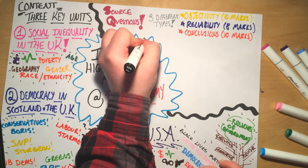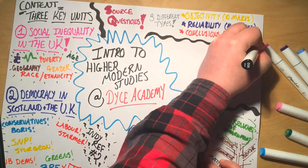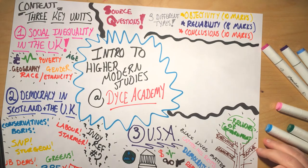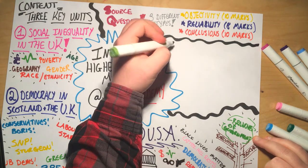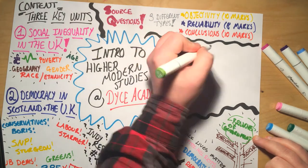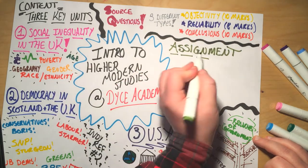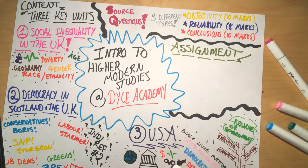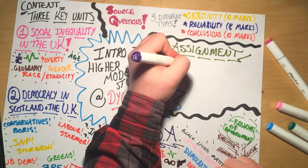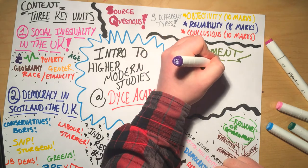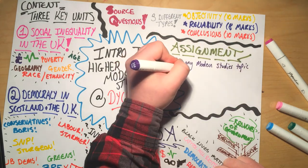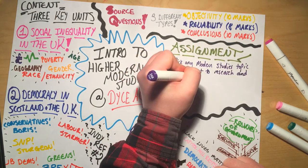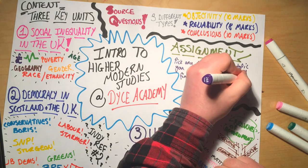So we've got those source questions that make up a significant portion of the course. In addition to that, we have our higher modern studies assignment, where you get to pick a topic that you are interested in from across all of modern studies, spend some more time looking at it, researching it, and producing an assignment report based on your research and different arguments related to that issue. Then we have a final write-up in class where you get to show off all you've researched for your assignment.